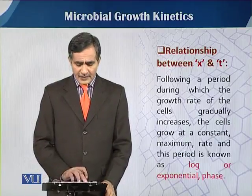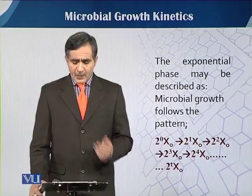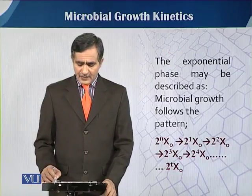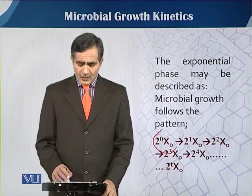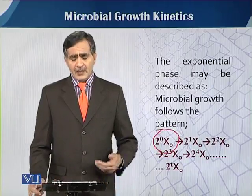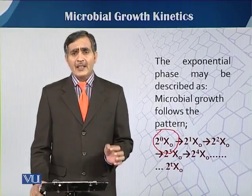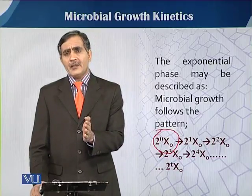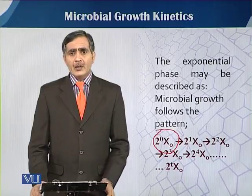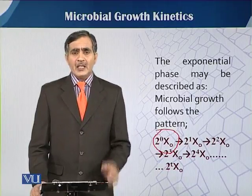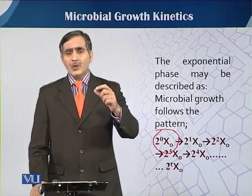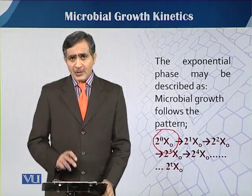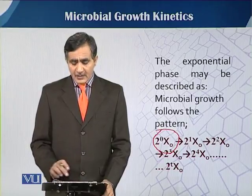The exponential phase may be described as the microbial growth pattern. You can see here this simple 2×N₀ — where 2 means double and N₀ is the amount of biomass added as inoculum. There are different generations: if one cell becomes 2, then in the same period 2 become 4 and 4 become 8. So with one cell or two cells as the inoculum level, we can see what change will occur.